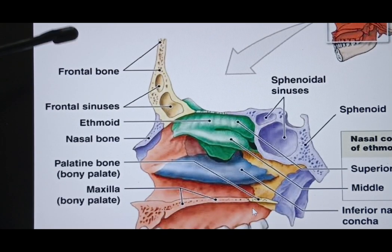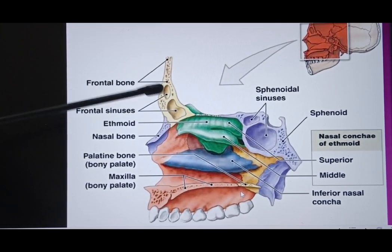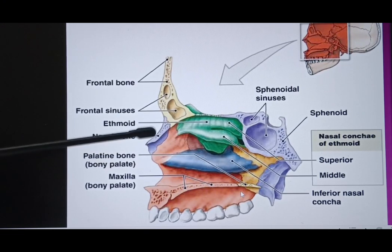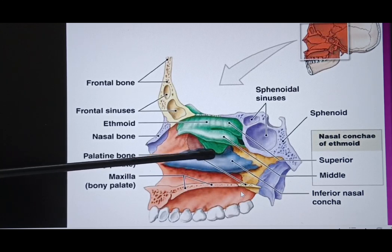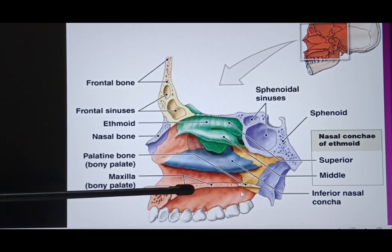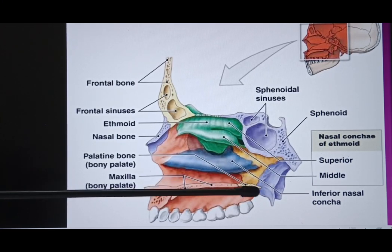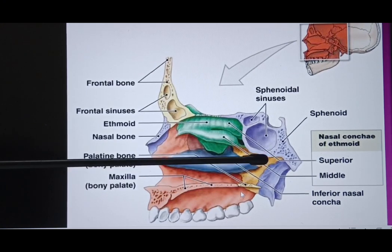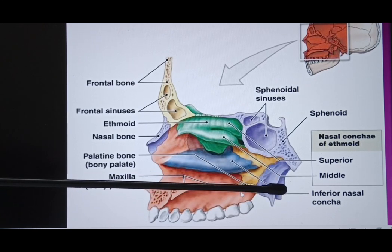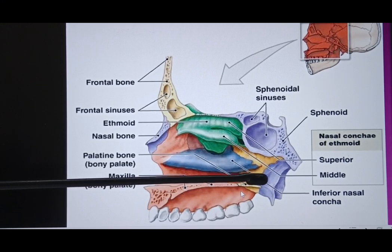There is another diagram showing the frontal bone with the frontal air sinuses, the green ethmoidal bone, the nasal bone in blue, and the inferior concha in a different color. Then we see the maxilla's bony part, and then the palatine bone with its horizontal portion, perpendicular plate, and medial and lateral pterygoid plates.